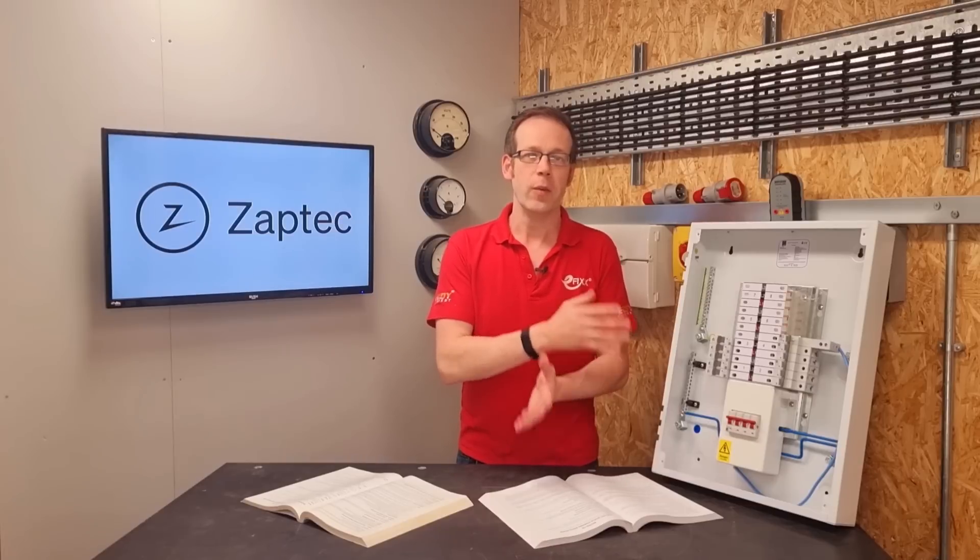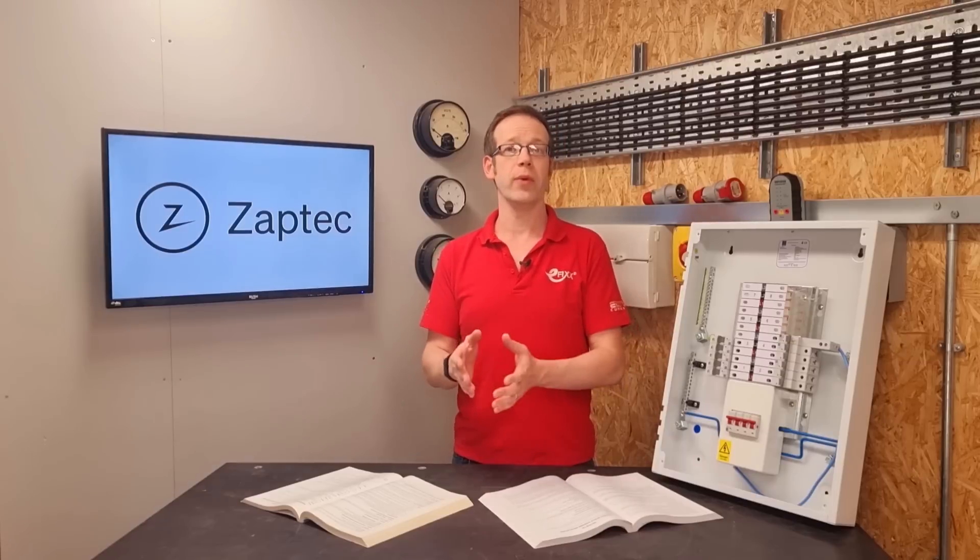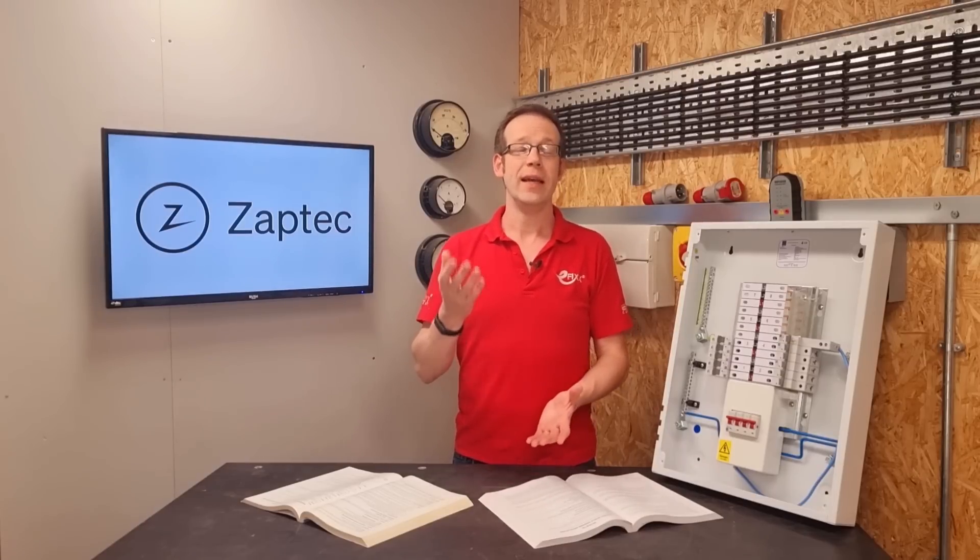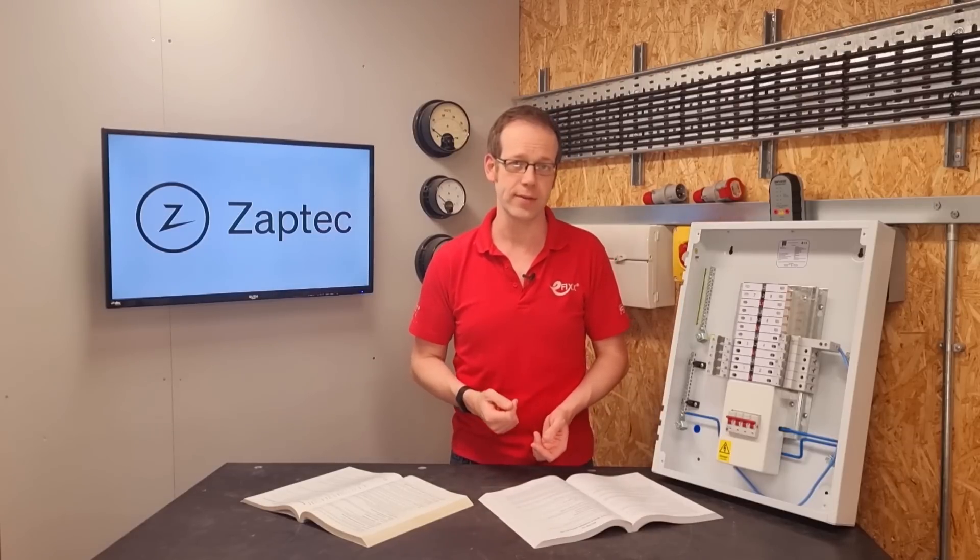When this happens some current will flow down the neutral and the voltage between the bodywork of the car and the earth will rise, and if it rises above 70 volts then anyone touching the car could be in serious danger if a PEN fault then occurs.